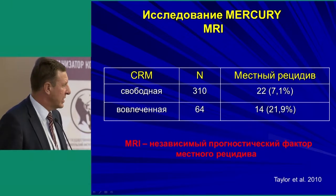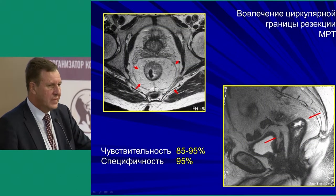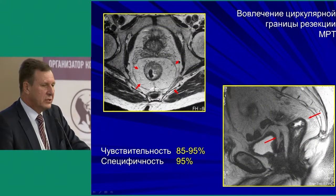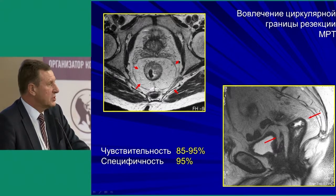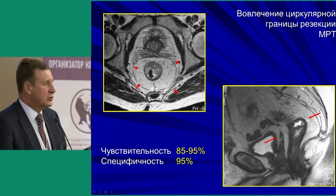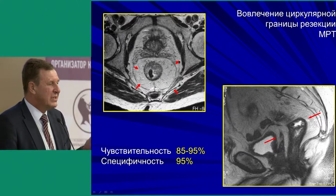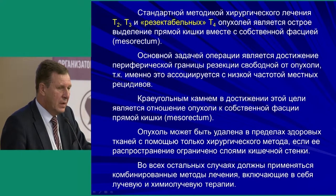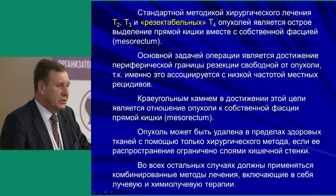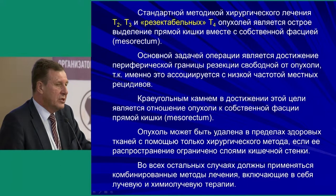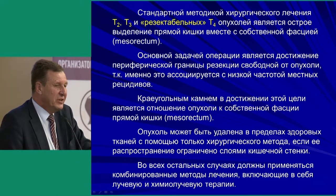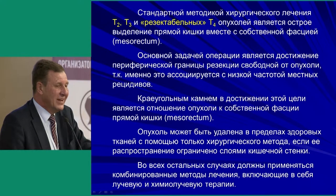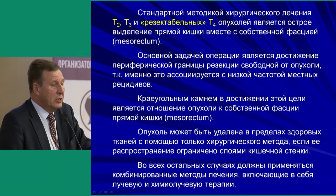MRI is the gold standard for assessing local relapse risk and providing a forecast. It is a highly sensitive and specific method, making it the gold standard both internationally and in our country. The presence of MRI is a must today in order to select the treatment modality, because otherwise we are blinded. The standard treatment today is surgical: for T2 and T3 tumors it is sharp resection with total mesorectal excision, with the main goal of achieving peripheral margins free of tumor cells.